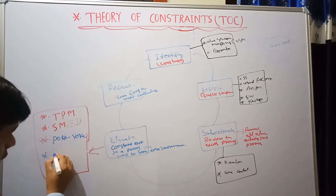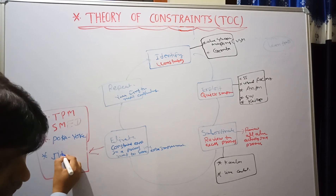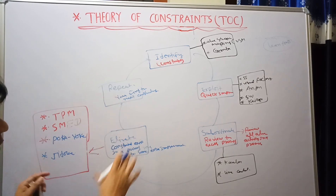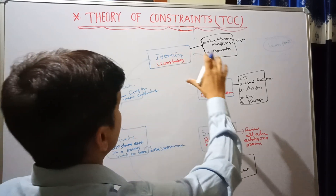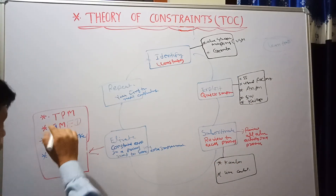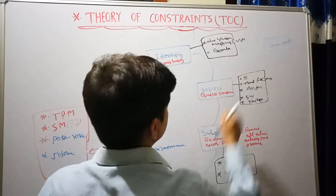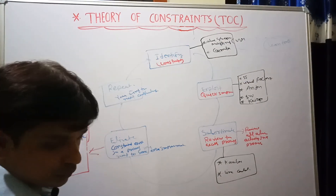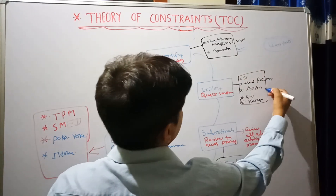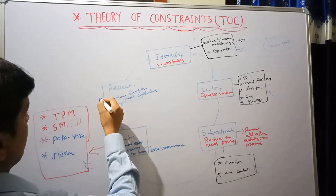These lean tools are available and applicable for TOC. This tool is most important and available for lean tools and also for TOC. Repeat that — these are the tools available for improving the process within the Theory of Constraints framework.